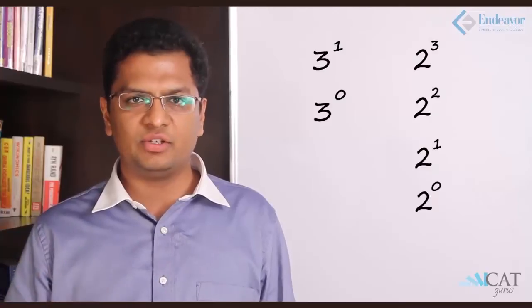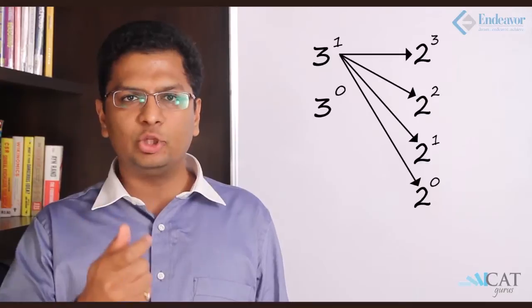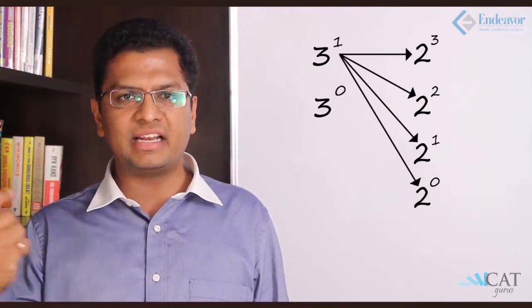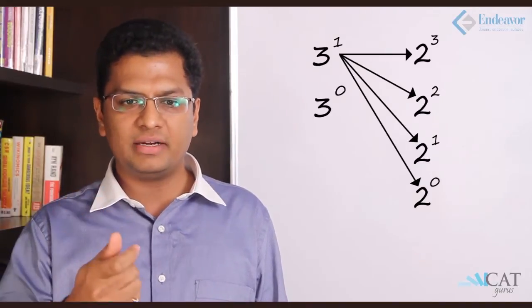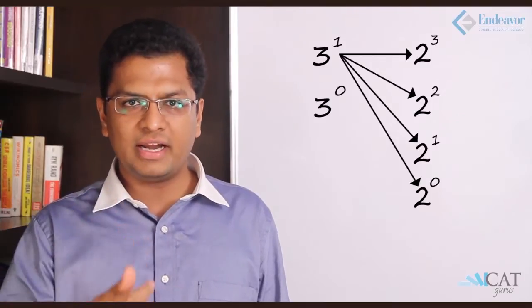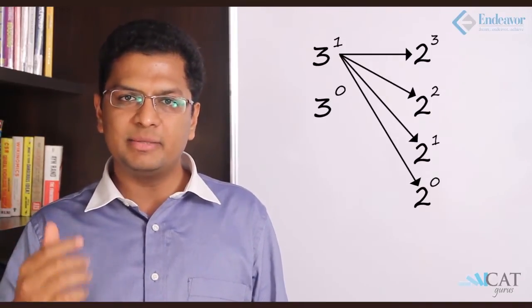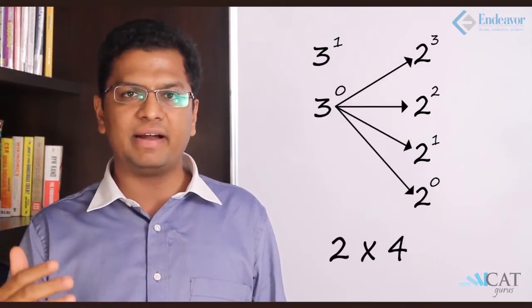These are 2 sets of numbers, so we can pick one from every set at a given point and find a factor. For example: 3¹ × 2³ gives 24; 3¹ × 2² gives 12; 3¹ × 2¹ gives 6; 3¹ × 2⁰ gives 3. Similarly taking 3 to the power 0 gives 4 more factors, so in all I get 8 factors. To summarize: add 1 to every maximum power, then multiply all those results — that gives the total number of factors a number can have.